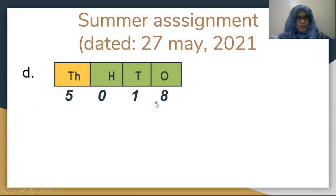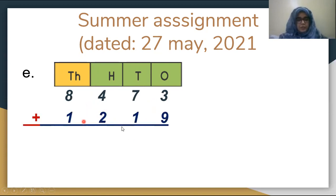Part D is 5018 plus 3948. 8 plus 8 is 16. Write 6 below and carry 1. 1 plus 1 is 2, 2 plus 4 is 6. 0 plus 9 is 9, and 5 plus 3 is 8. The answer is 8966. That's ones, tens, hundreds, and thousands.